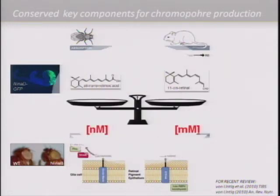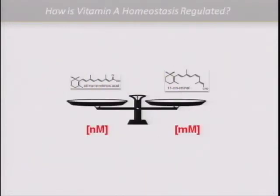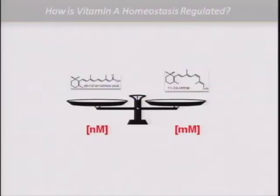Vertebrates also face another challenge: they do not only require vitamin A for vision like flies do, they also require it for retinoic acid synthesis. Retinoic acid has to be produced in more or less each and every tissue, and exists there in nanomolar concentrations. 11-cis-retinol, the chromophore for our visual pigments, is only produced in the eyes but exists there in millimolar concentrations in the photoreceptors. Comparing these, this is a million-fold difference.